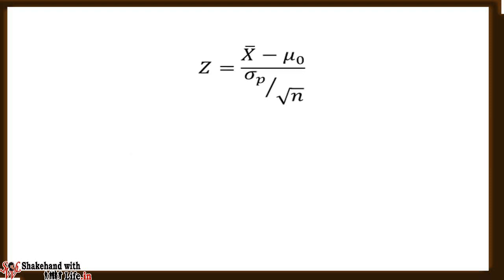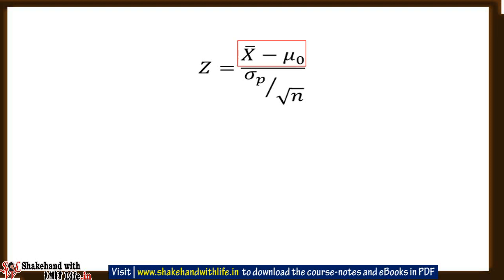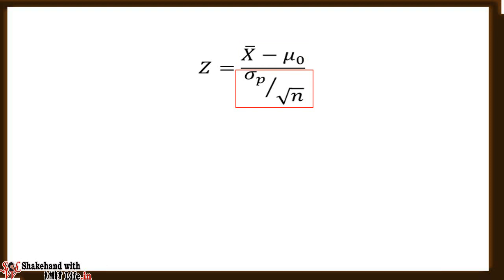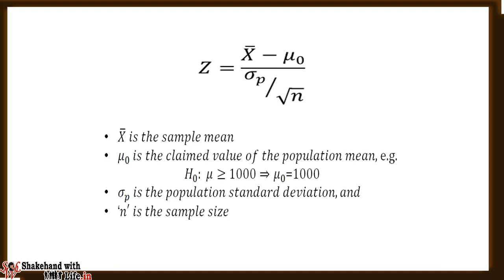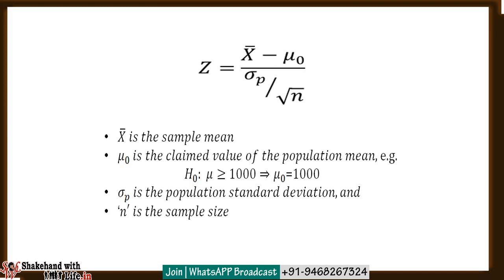The test statistic for the Z test is: Z equals X-bar minus mu-naught in the numerator, and sigma P divided by the square root of n in the denominator. Here X-bar is the sample mean, and mu-naught is the claimed value of the population mean that gives maximum benefit of doubt to the null hypothesis. For example, if H-naught states mu is greater than or equal to 1000, we use the value 1000 in place of mu-naught. Sigma P is the population standard deviation and n is the sample size.